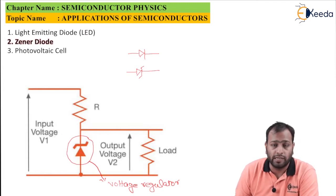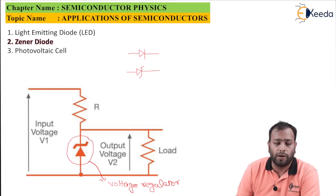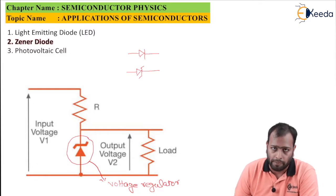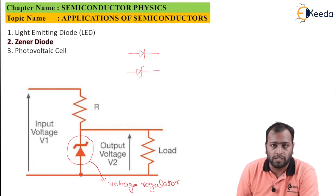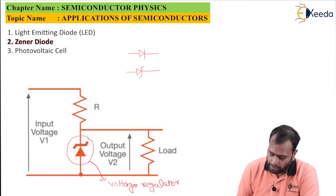But in case of zener diode the reverse breakdown voltage is almost equal to 3.5V, 5.8V. There are various special values under which zener diode is fabricated. So basically zener diodes are meant only for the use of reverse biased mode wherein they are used as voltage regulator.